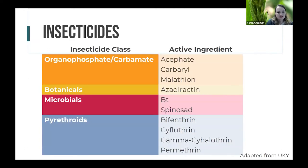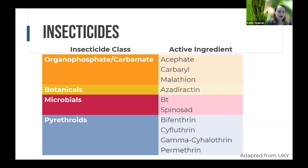There are several different types of products marketed for bagworm control. Organophosphates include carbaryl and malathion; botanicals include azadirachtin; microbials include BT and spinosad — spinosad is more broad spectrum than BT and may have implications for non-target organisms. Pyrethroids include bifenthrin, cyfluthrin, and permethrin.